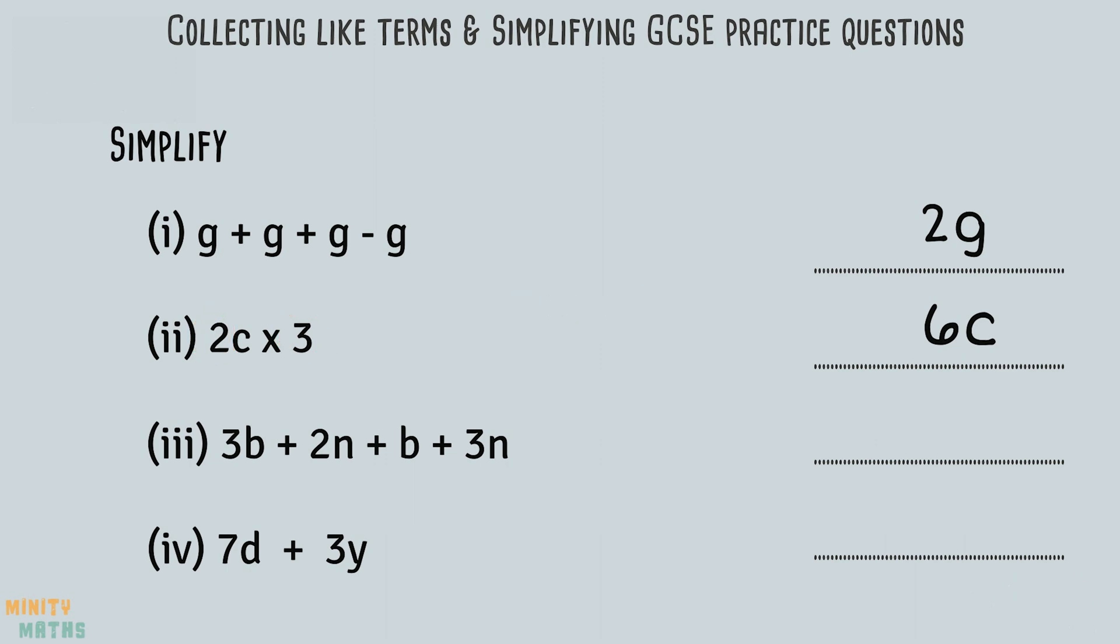For question three, notice we have two different terms here, and because this involves addition, we cannot add two different terms together. So we should collect the like terms and deal with them individually. We can collect 3b and b together, adding them gives us 4b. Then we can collect the n terms together, including the signs, giving us 5 lots of n. This expression is now in its simplest form.